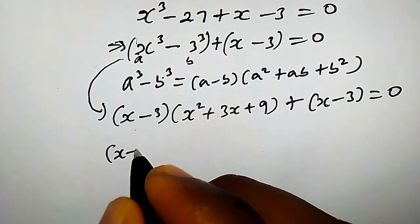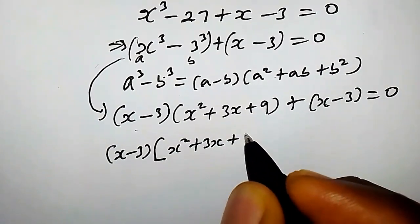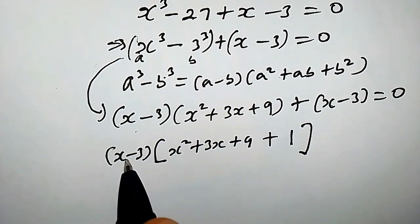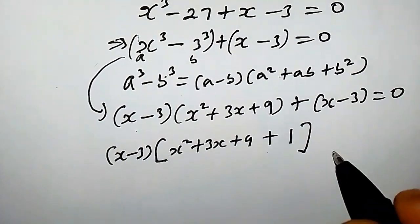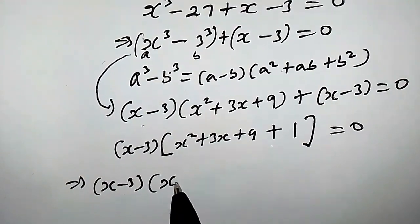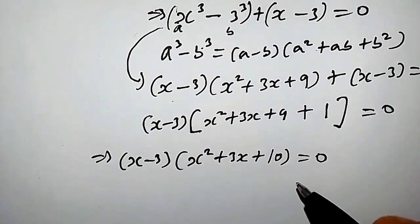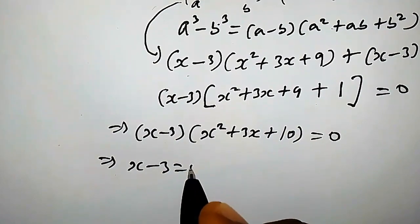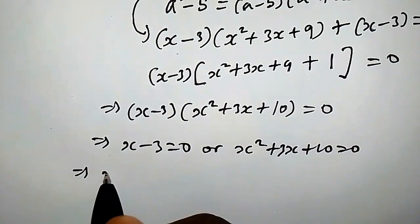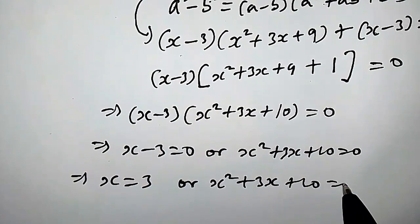So we have x minus 3 times the quantity x squared plus 3x plus 9, plus 1, equals 0. This simplifies to x minus 3 times x squared plus 3x plus 10, equals 0. This implies that x minus 3 equals 0, or x squared plus 3x plus 10 equals 0. Therefore x equals 3, which is the real solution.